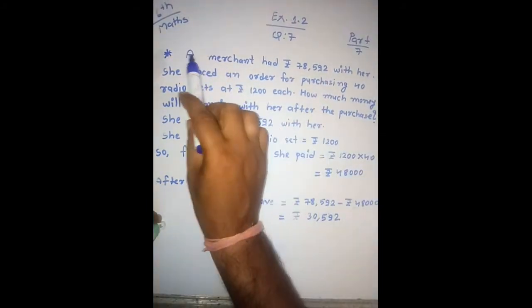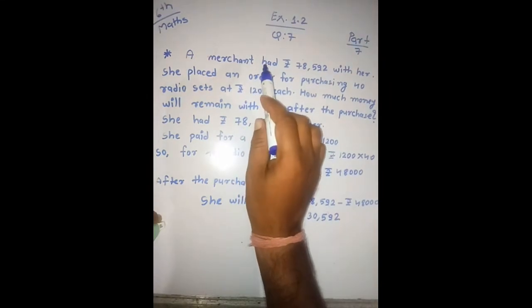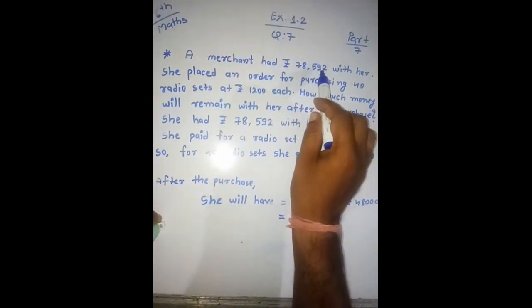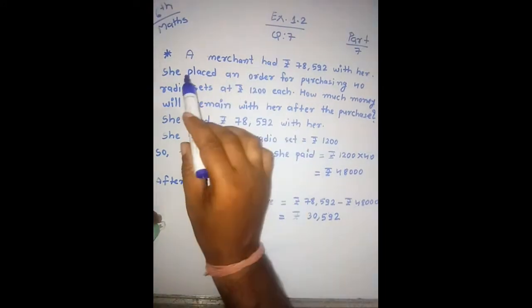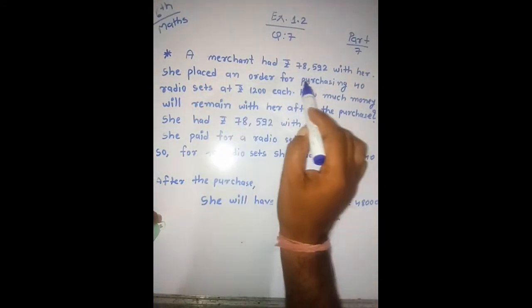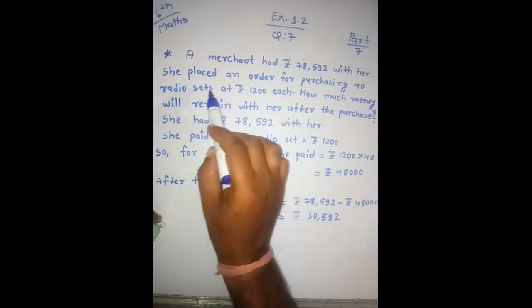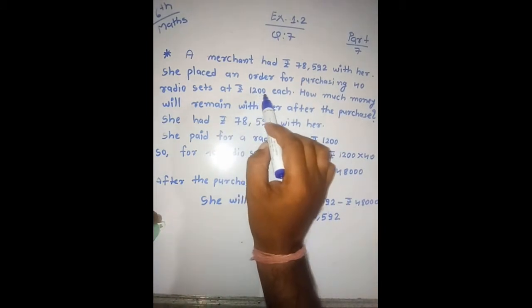Ek vyapari hai jis ke paas jo hai 78,592 rupees. She placed an order for purchasing 40 radio sets at rupees 1200 each.